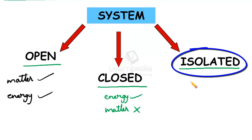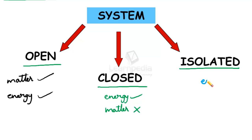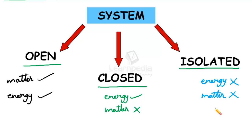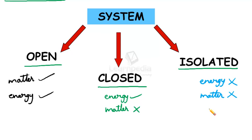In the case of an isolated system, a system can neither exchange energy nor matter with the surroundings. So neither energy nor matter is exchanged between the system and the surroundings. When hot tea is kept in a thermoflask, no exchange of energy takes place and all the vapors formed remain in the same vessel. So hot tea kept in a thermoflask is an example of an isolated system.